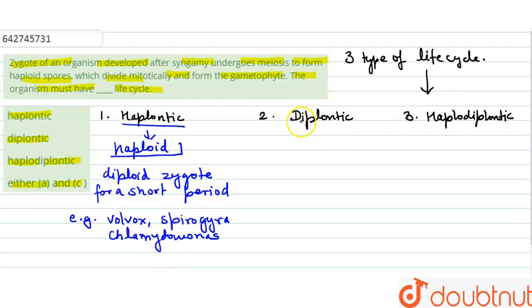In diplontic life cycle, the main form is diploid, which produces the gametes. Examples are gymnosperms and angiosperms. This is the example of diplontic life cycle.